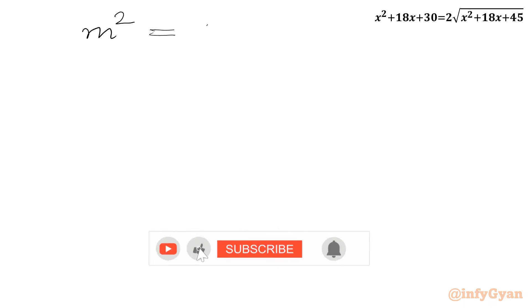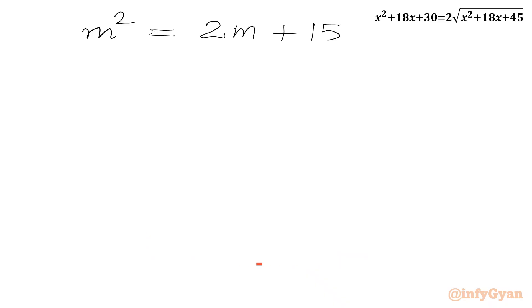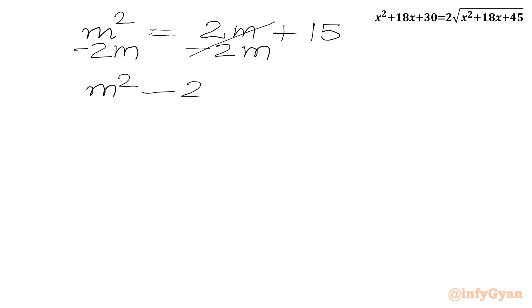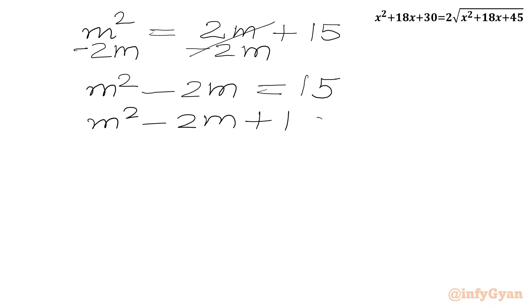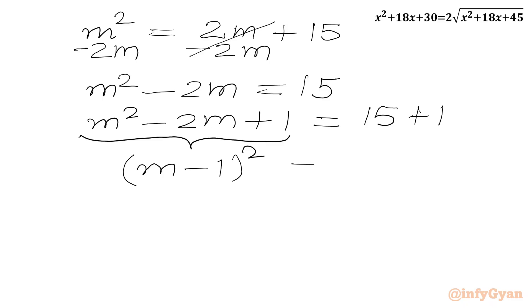Our equation is M squared equals 2M plus 15. We subtract 2M from both sides to get M squared minus 2M equals 15. Now we add 1 to both sides: M squared minus 2M plus 1 equals 16. The left-hand side is a perfect square, so we write this as M minus 1 whole squared equals 16, which is 4 squared.